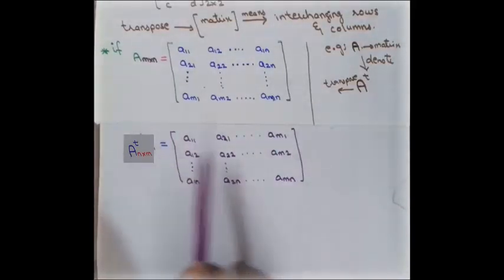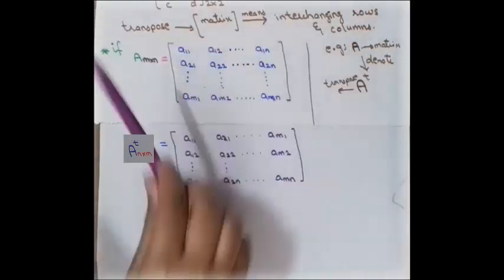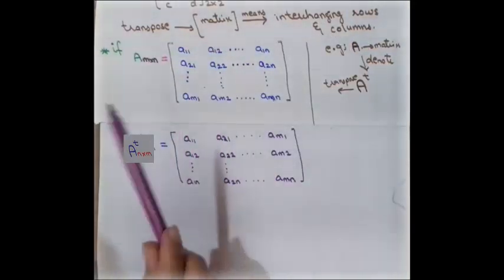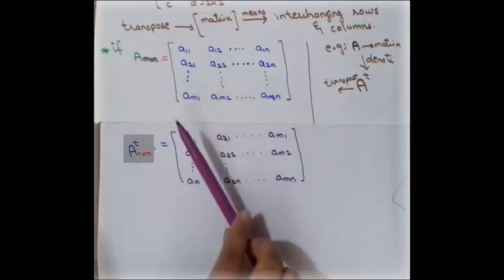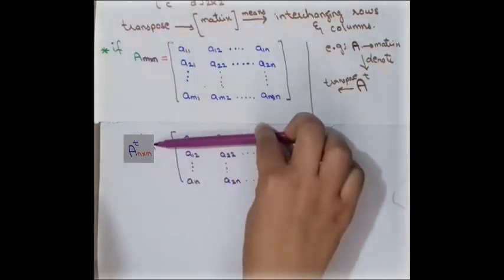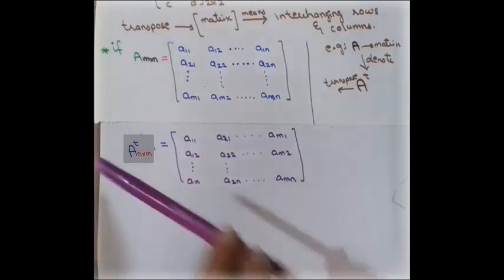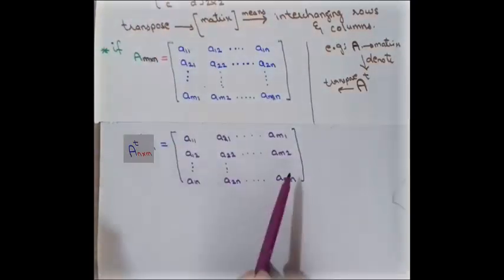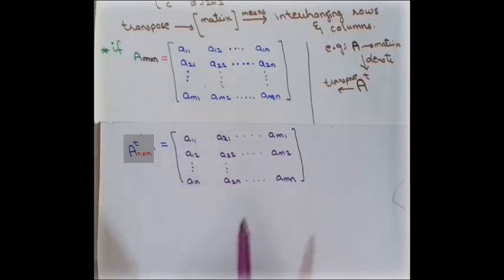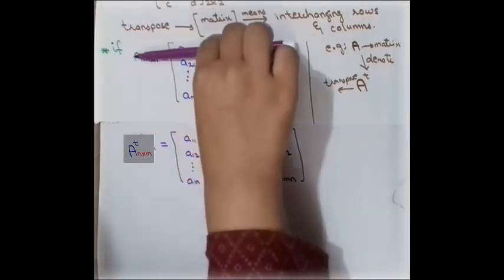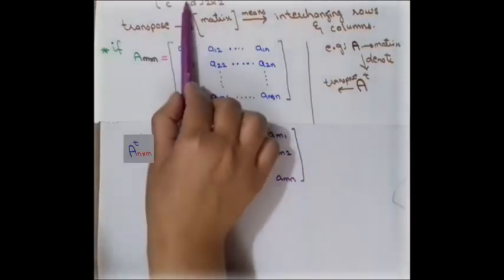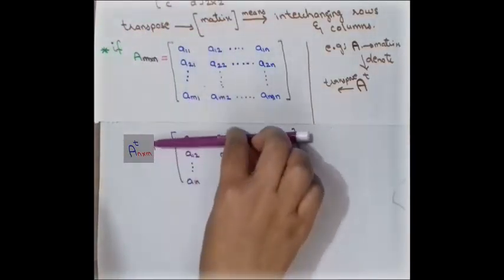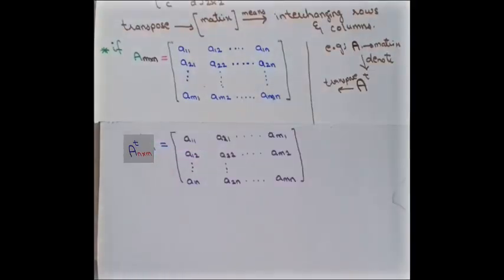Basically, the transpose is a swapping of rows into columns. Notice that it is not a fixed thing — you can also say the columns swap into rows. The main concept is to swap the rows into columns or columns into rows. In other words, all the columns of the original matrix become the rows of the transpose matrix. Let us take examples for better understanding.